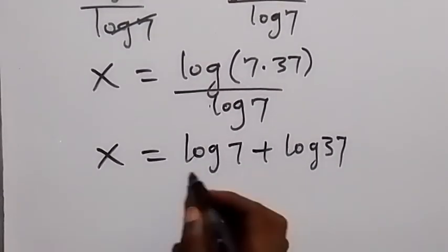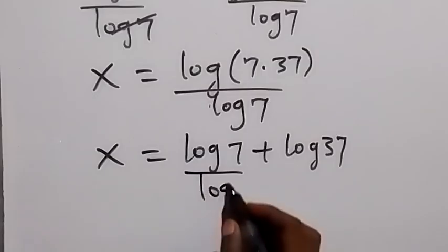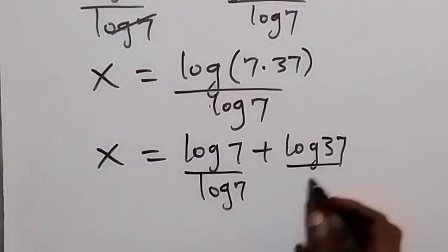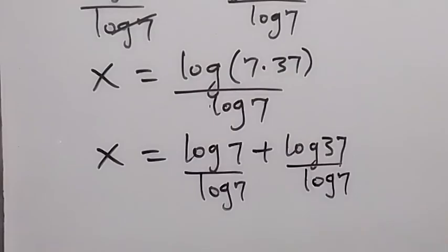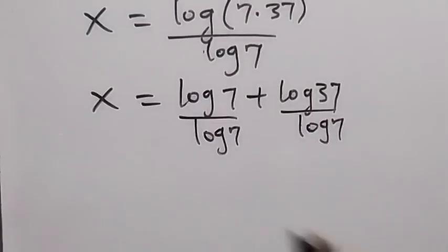So we can separate it and we have log 7 over log 7 and log 37 over log 7. So log 7 over log 7, that becomes 1.